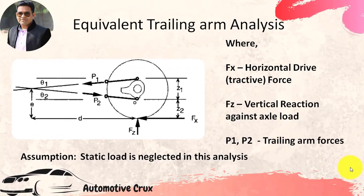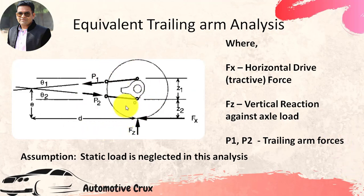The geometry which produces the counteracting forces is known as anti-squat and anti-pitch suspension geometry. To understand the anti-squat suspension geometry, we have adapted the equivalent trailing arm analysis. Anti-squat forces can be generated on a rear-drive axle by choice of the suspension geometry. The mechanics of this system can be understood most easily by recognizing that all suspensions are functionally equivalent to a trailing arm with regard to the reaction of forces and moments onto the vehicle body. To understand the whole phenomenon, we have taken a small geometry of the vehicle.